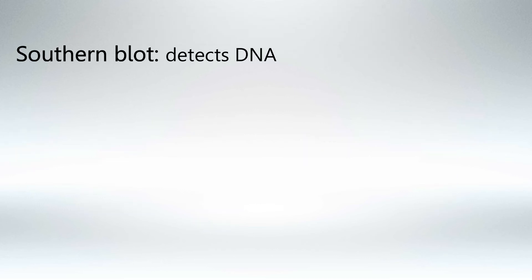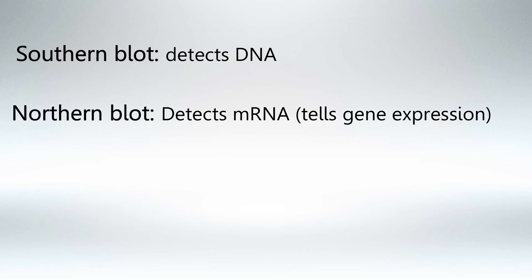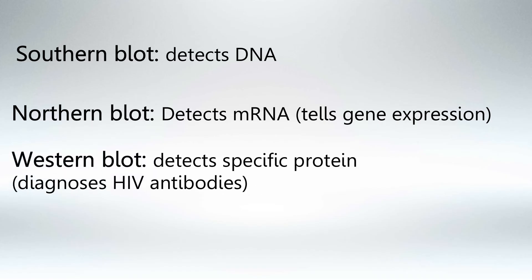Now we use the southern blot to detect DNA like we just described. And we use the northern blot to detect gene expression by looking at mRNA. So if we have mRNA of a certain gene that means that this gene is expressed. And most famously we use western blot to detect specific proteins, most importantly HIV antibodies.